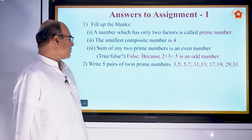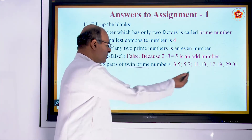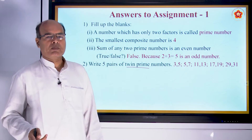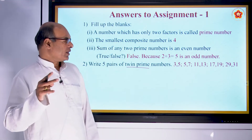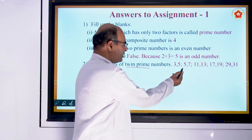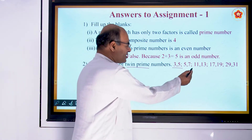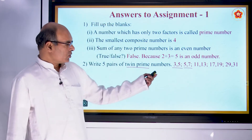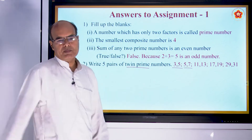The next question: write 5 pairs of twin primes. If the difference between any two consecutive prime numbers is 2, they are called twin prime numbers. For example, 3 and 5 are prime numbers with difference 2, and 5 and 7 are prime numbers with difference 2. These are examples of twin primes.